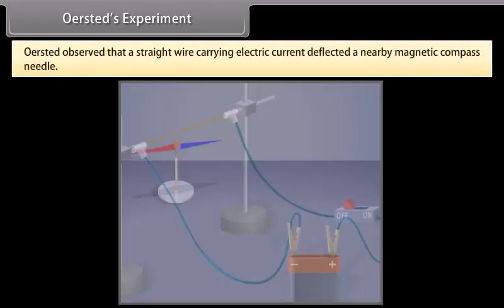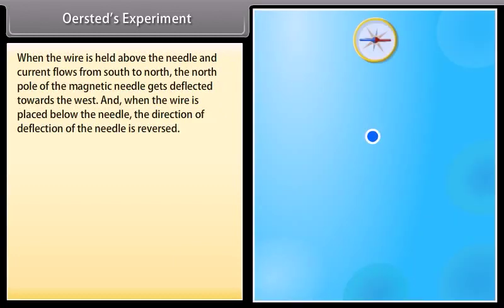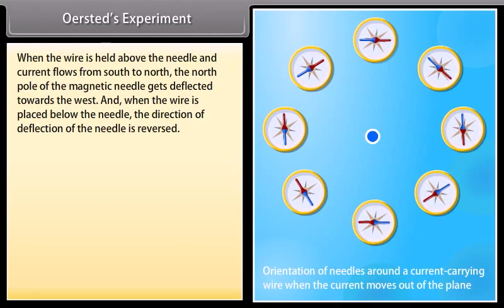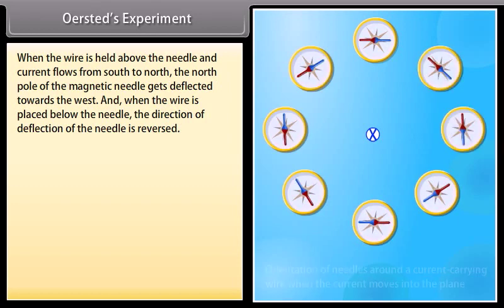Oersted's Experiment. Oersted observed that a straight wire carrying electric current deflected a nearby magnetic compass needle. When the wire is held above the needle and the current flows from south to north, the north pole of the magnetic needle gets deflected towards the west.